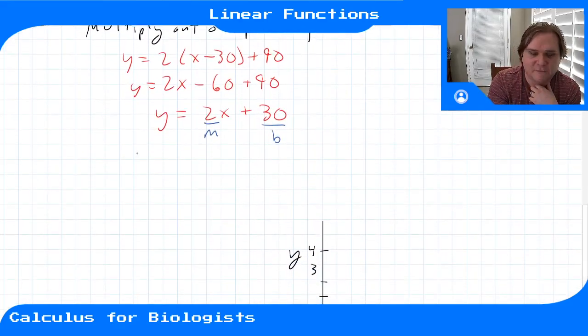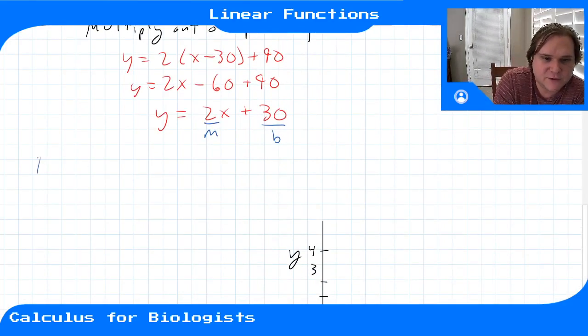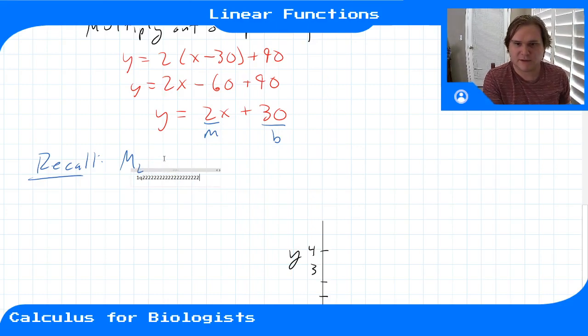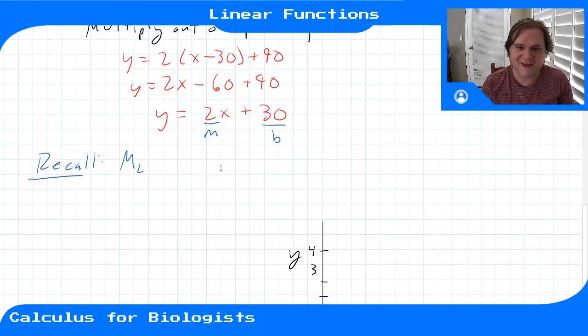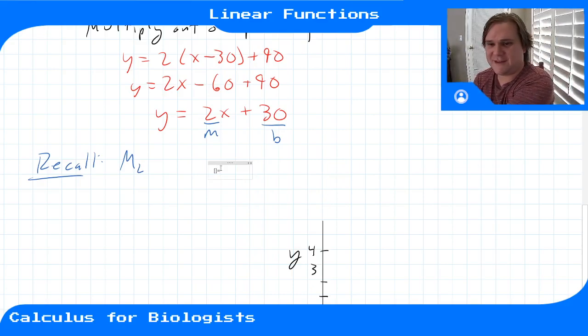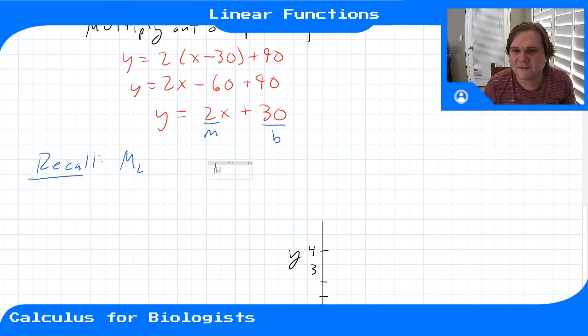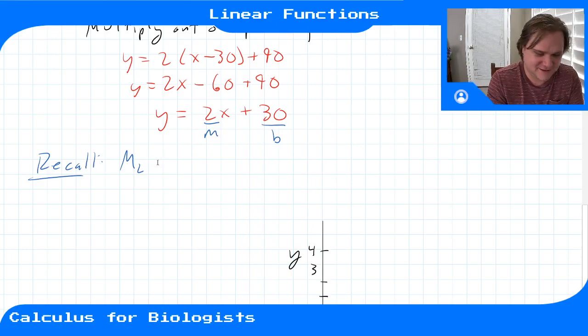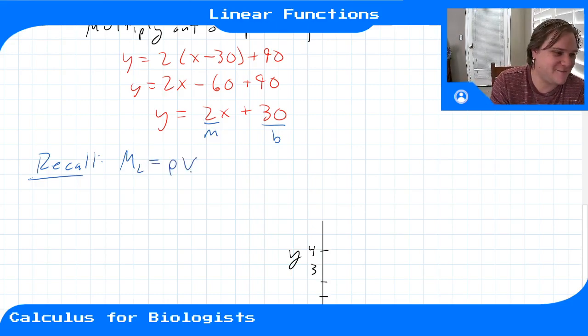So if we think back to that table of formulas, right, we remember that the mass of a liquid, or of anything really, the mass of anything is the density times the volume. This is for solids, liquids, what have you.